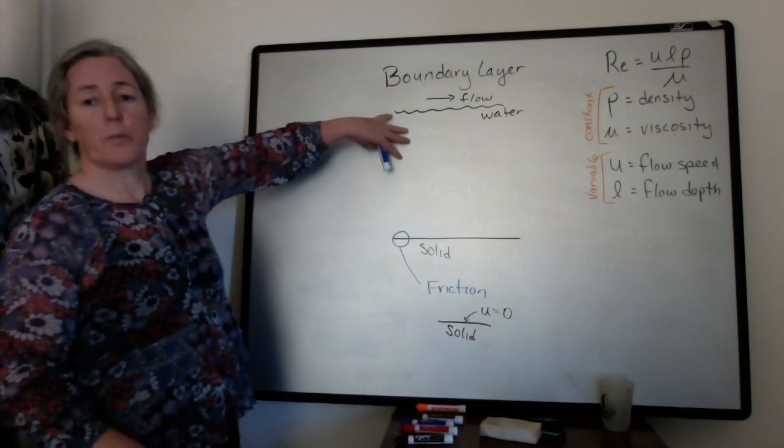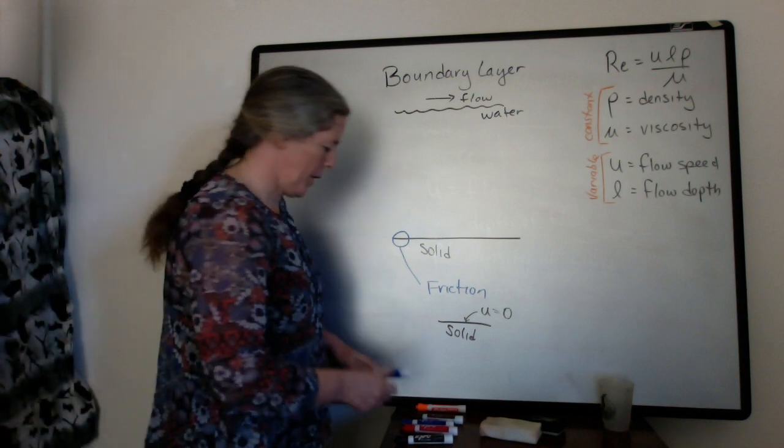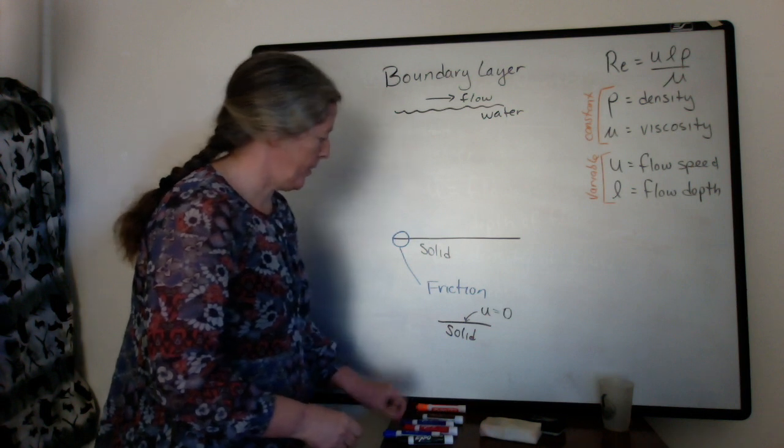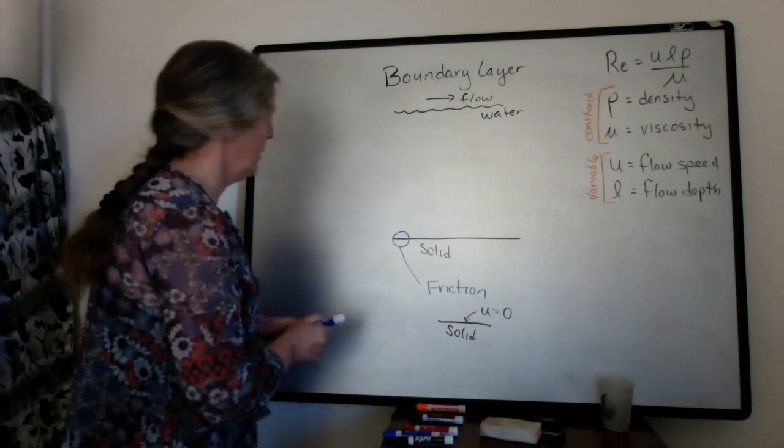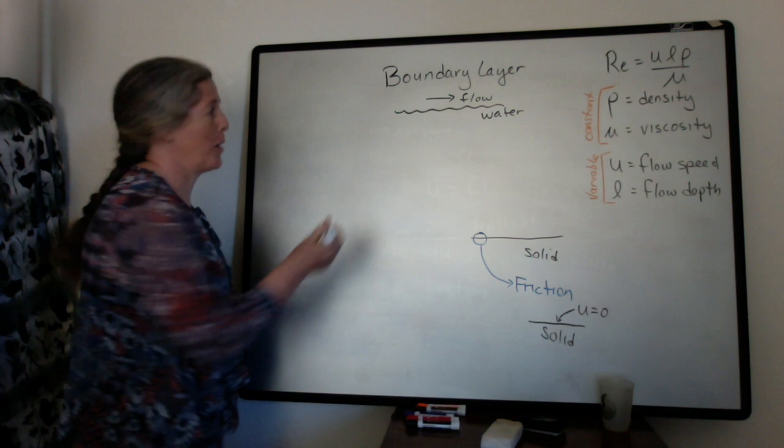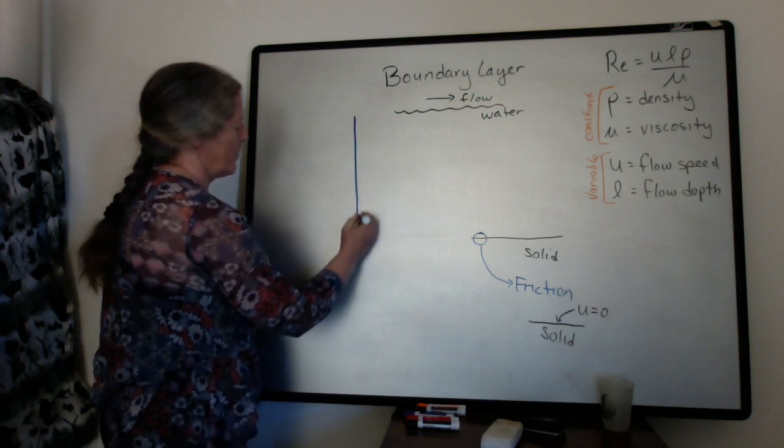But the rest of the bulk of the water is still flowing downstream. So what we can do is we can make a plot of the flow speed versus water. I've now moved my diagram over, so I can plot flow speed with depth in the flow.